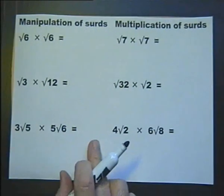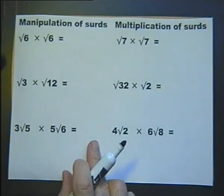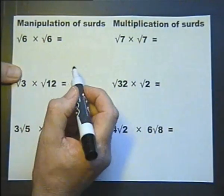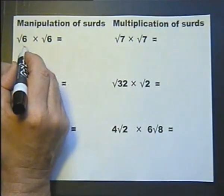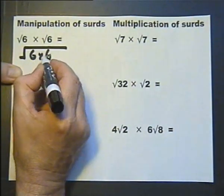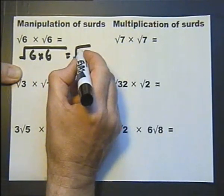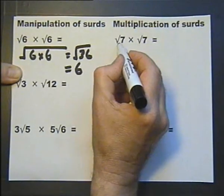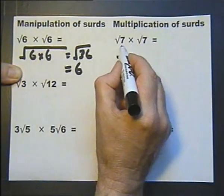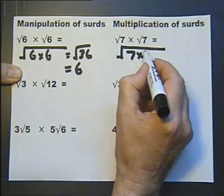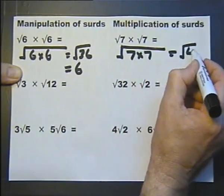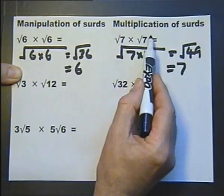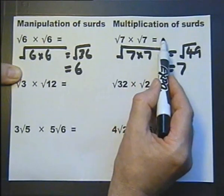Now let's look at multiplication of surds. The square root of 6 multiplied by the square root of 6 can be written as the square root of 6 × 6, which is therefore the square root of 36, which is 6. Similarly, √7 × √7 = √49 = 7. So the square root of a number multiplied by itself gives that number.